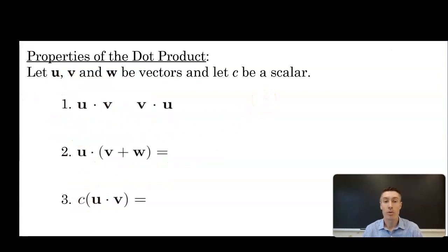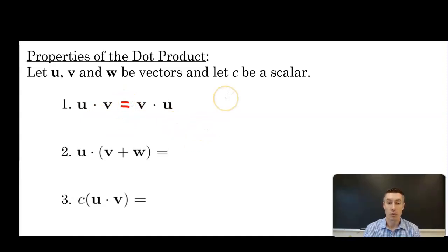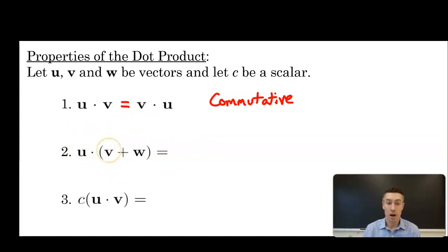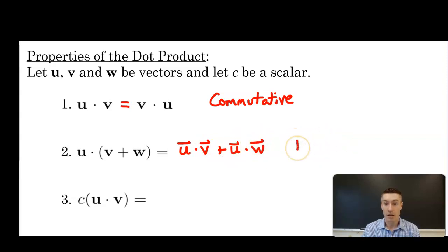Now let's talk about some of the properties of the dot product. Being an operation like addition or subtraction, we need to define its properties. Let u, v, and w be vectors, and let c be a scalar. The first property is that u·v = v·u, meaning the dot product is commutative — the order doesn't matter. The second property is that u·(v + w) = u·v + u·w, meaning the dot product is distributive over vector addition.